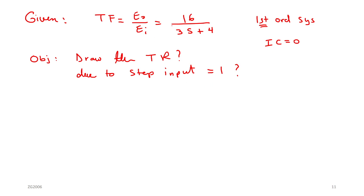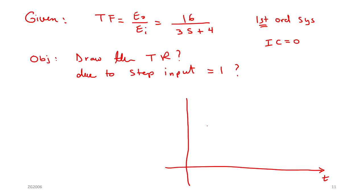Let's understand this problem. The transfer function is the model of your system. You have to know the model of your system in order to draw the transient response — either the transfer function or the equation of motion. Here he gave you the transfer function. This is the short solution.